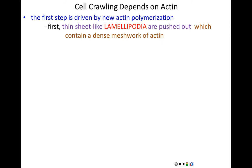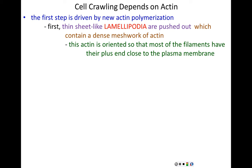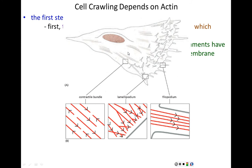That thin sheet — the advancing front of this crawling surface — is made up of lamellipodia. Lamellipodia are pushed out, they contain a dense meshwork of actin, and the actin is oriented in a polar way, with most filaments having their plus end close to the plasma membrane. Here is a crawling cell with its nucleus — this cell is crawling from left to right, sensing signals that have been released from the front.